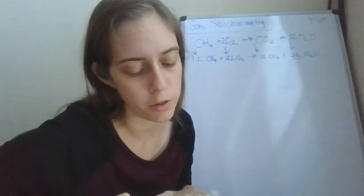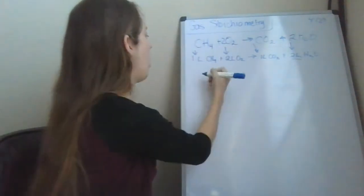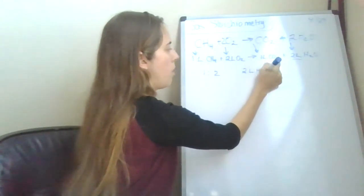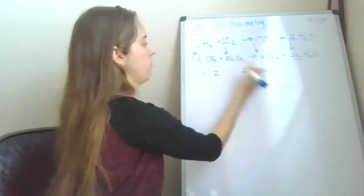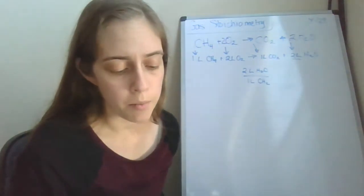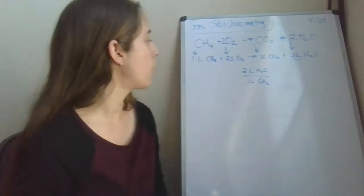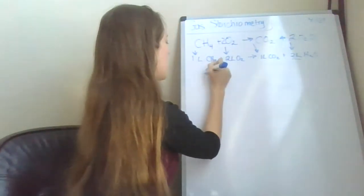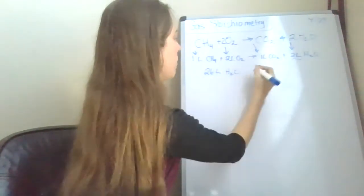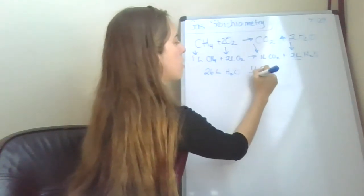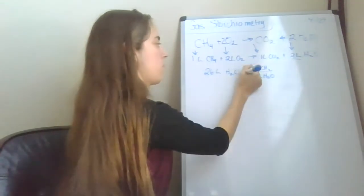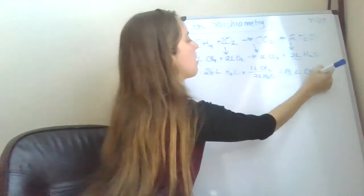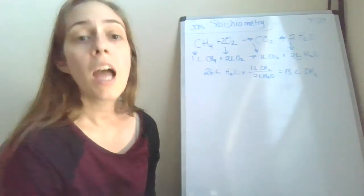What volume of methane is needed to produce 26 liters of water vapor? Well, the ratio of methane to water vapor is 1 to 2. That's going to be a conversion factor now. We know we have 26 liters of water, and for every 1 liter of methane we get 2 of water. So 26 times 1 half equals 13 liters. We're going to need 13 liters of methane in order to get 26 liters of water. It's just ratios.